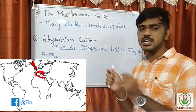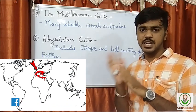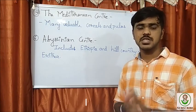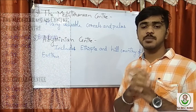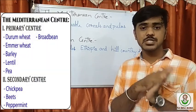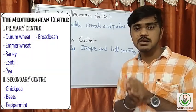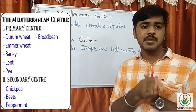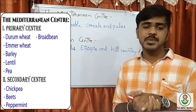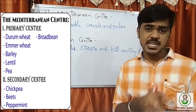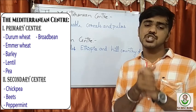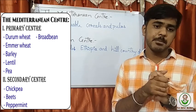The Mediterranean center of origin has many valuable cereals and pulses. It is the region near the Mediterranean Sea. It is the primary center of origin for emmer wheat, durum wheat, barley, lentil, pea, and broad bean, and the secondary center of origin for chickpea, beets, and peppermint.